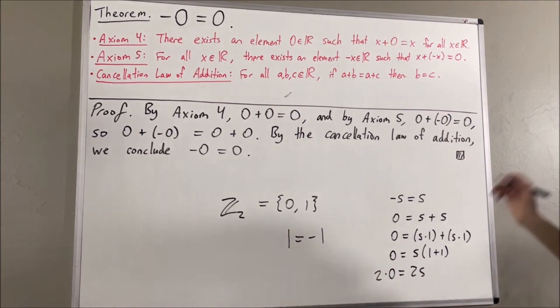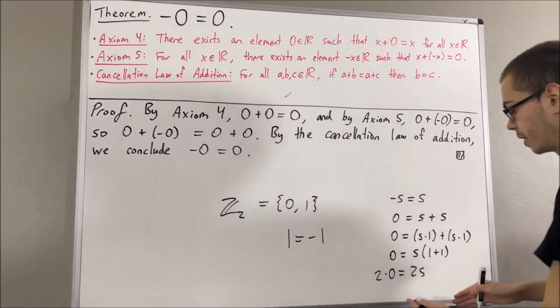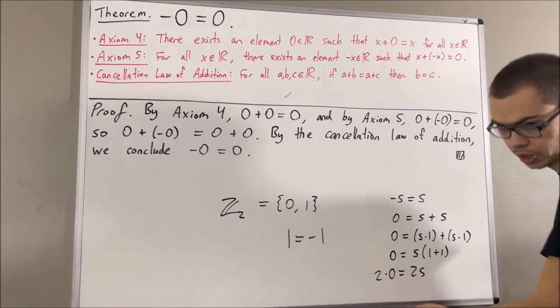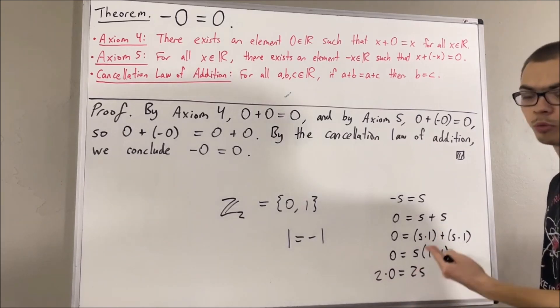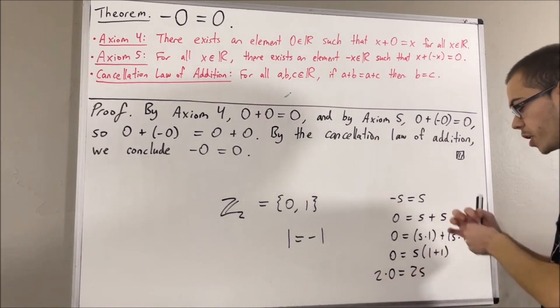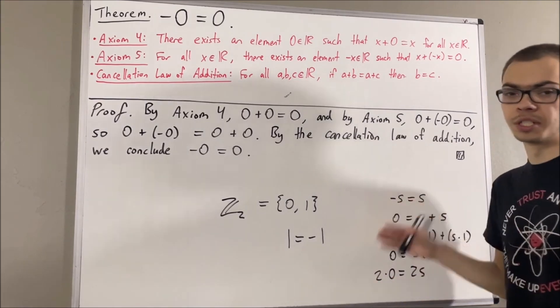And then, by the cancellation law of multiplication, your instinct is probably telling you to divide 2 on both sides. But this is where we reach problems. How do we know that 2 is not equal to 0?